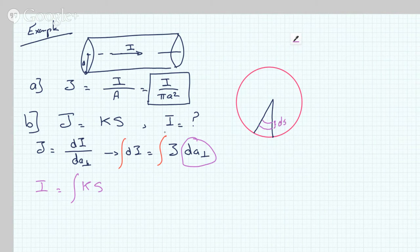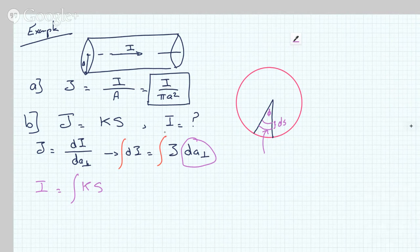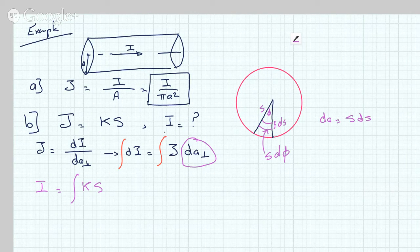If this angle here is φ, then this will be S dφ. Of course, from here to here is S, so this becomes S dφ. Since the area is just the width of the piece times the length, this would just be S dS dφ.